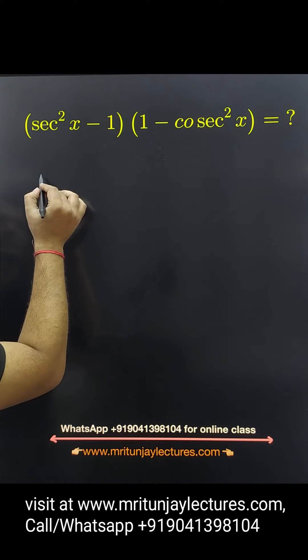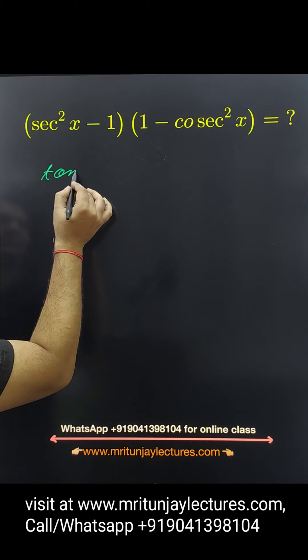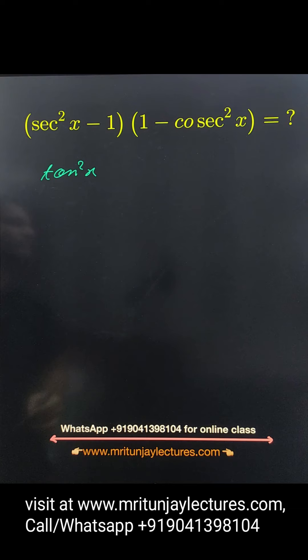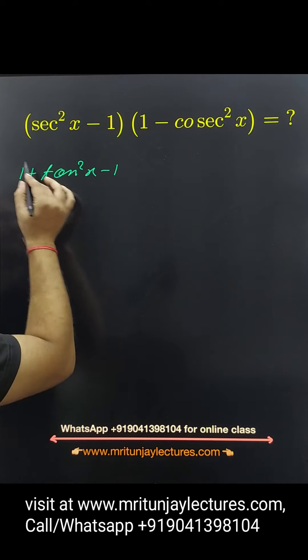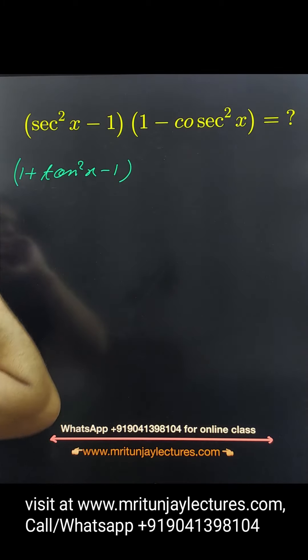So basically this one is a tan square x. If any doubt then written 1 plus tan square x minus 1, sec square x is written as 1 plus tan square x.